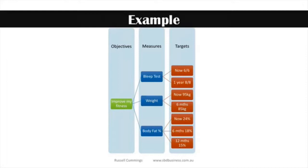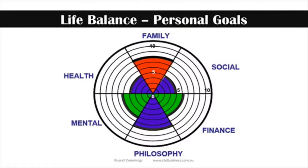Brainstorm the objectives you want to achieve, and then from that create some measures. Where do you get your objectives from? For personal goals, I would use something like the life balance model, which has been part of some of the other training we've done. You can use each of these areas as areas in your life where you'd like to set some objectives.